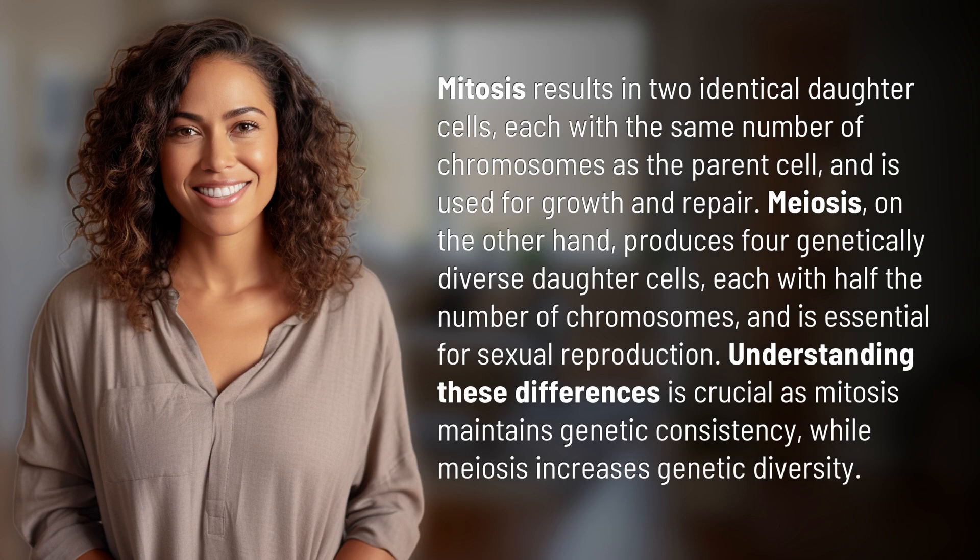Meiosis, on the other hand, produces four genetically diverse daughter cells, each with half the number of chromosomes, and is essential for sexual reproduction.